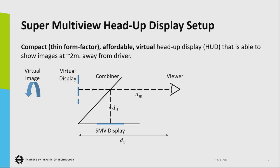What we propose here is to create a compact, affordable, and virtual head-up display setup that is able to show images at typical head-up display distance, like around 2.5 meters, which can be seen here. As typical head-up display setups, we use a combiner, which in this case is the windshield of the car, and some image projection unit.